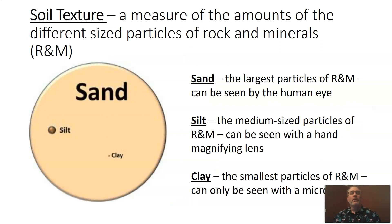The first thing we need to start learning about is that soil texture is going to help us understand the water and the air that we find in soil. Soil texture is a measure of the amounts of different size particles of rocks and minerals. When we look at any soil sample, we're going to find three basic types of particles, and those particles are strictly set apart by size — that's the only difference between them. Those three particle sizes are sand, silt, and clay.